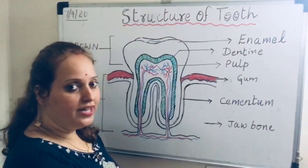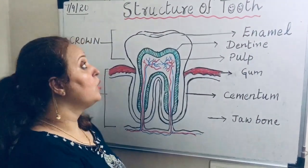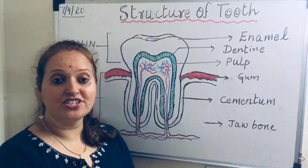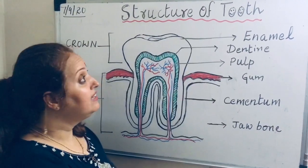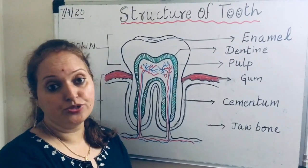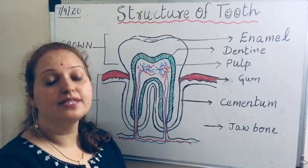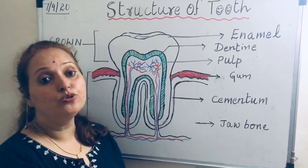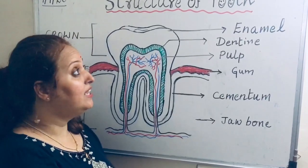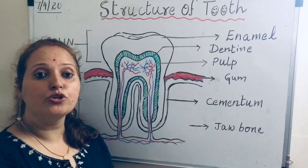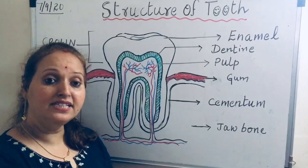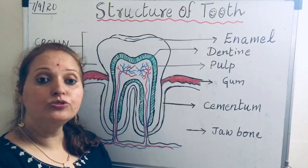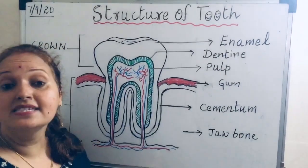Hello children, today we are going to learn about the structure of a tooth. As we all know, the process of digestion starts in our mouth. Teeth play a very important role in breaking food into a simple form. We cannot eat or digest solid food directly — it needs to be broken into smaller pieces. Teeth play a very important role in chewing, biting, cutting, and grinding the food, which takes place in our mouth. An adult has 32 teeth.